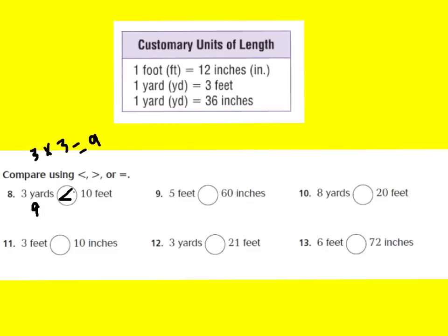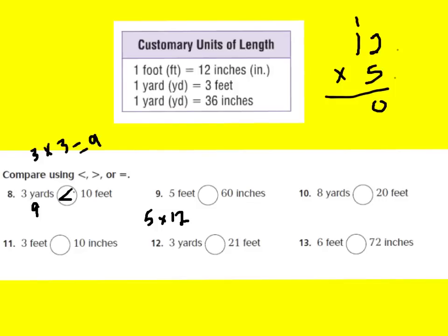Number 9 says: is 5 feet less than, greater than, or equal to 60 inches? I know that 1 foot equals 12 inches. So if I have 5 feet, I would say 5 feet times 12. Solving 12 times 5: 5 times 2 is 10, carry the 1; 5 times 1 is 5, plus 1 is 6. So 5 feet equals 60 inches — they are equal.